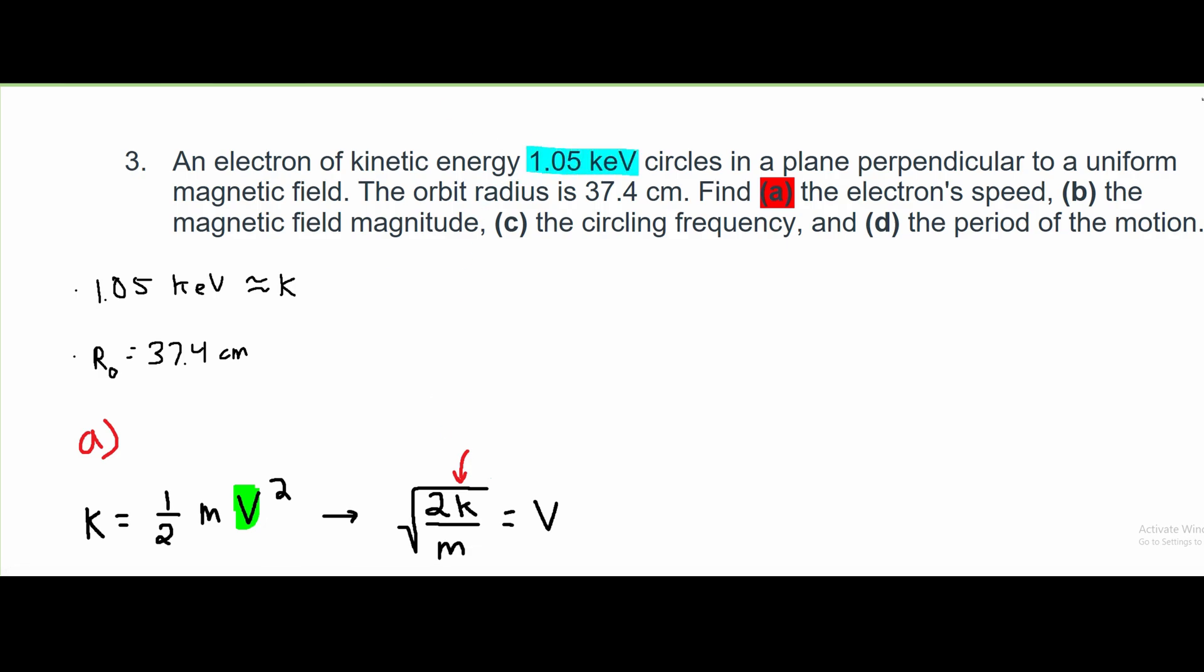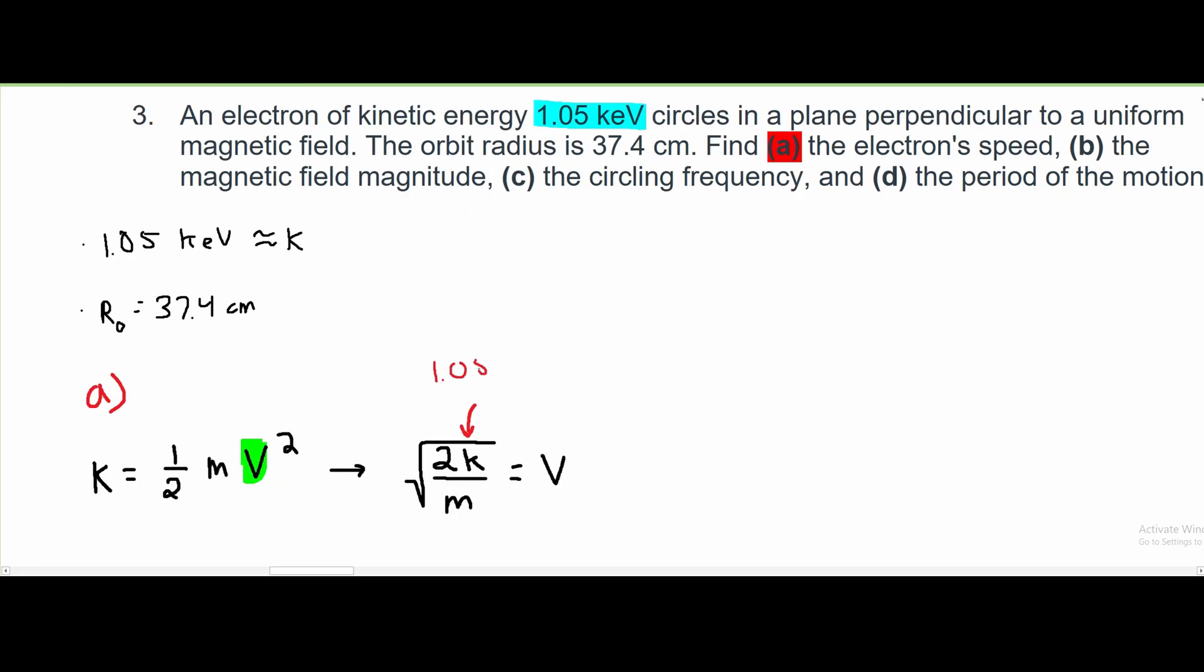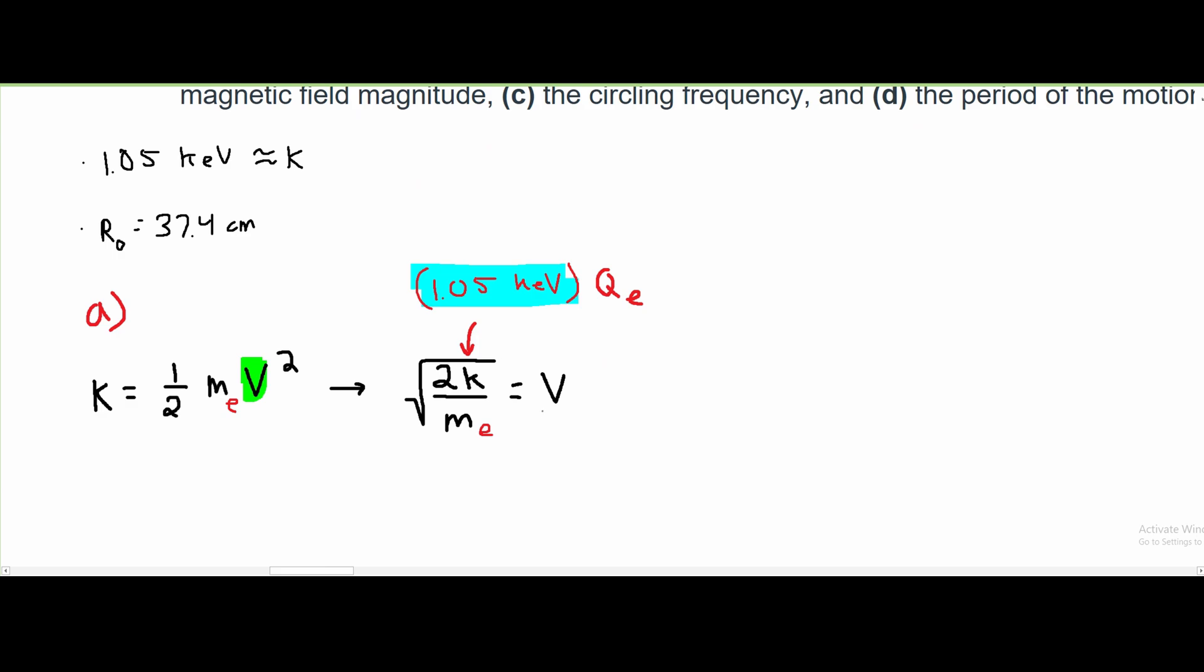It's going to be 1.05 keV. We're going to have to convert this to just be eV without the k, and it's also going to be the charge of an electron, q sub e. And we can also say that our m is the mass of an electron, since we're looking at an electron. Now we can plug in all the values that we have.